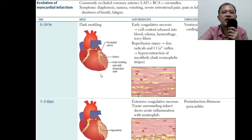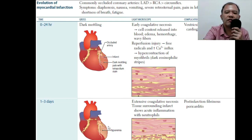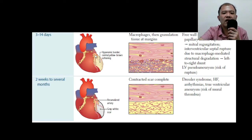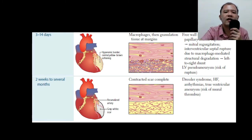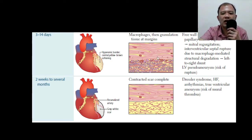These are the gross changes of myocardial infarction: first, dark mottling in the first 24 hours; followed by hyperemia in 1 to 3 days; within 3 to 14 days, hyperemia at the border but central yellow-brown softening; and from 2 weeks to several months, a gray-white scar. Histologically, you see neutrophils, then granulation tissue, and finally a scar. When the heart is infarcted, it releases markers — troponin I is the most specific marker, elevating for as long as 2 weeks. You also have CK-MB and myoglobin.